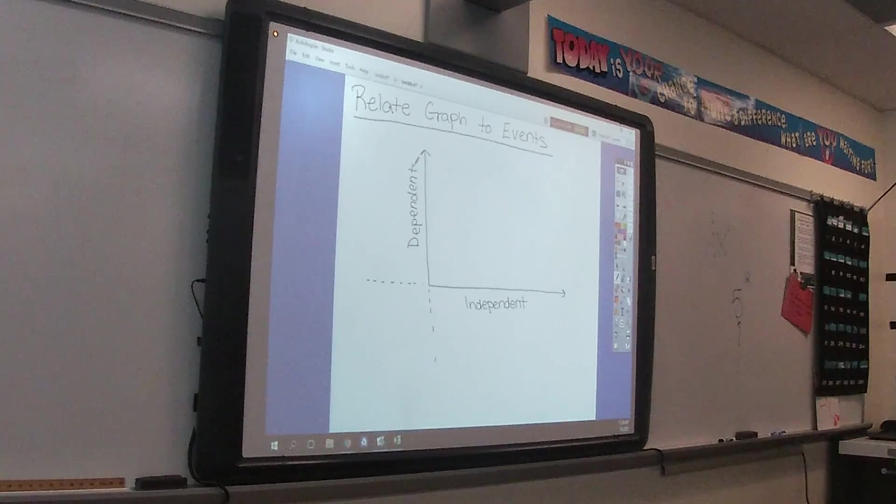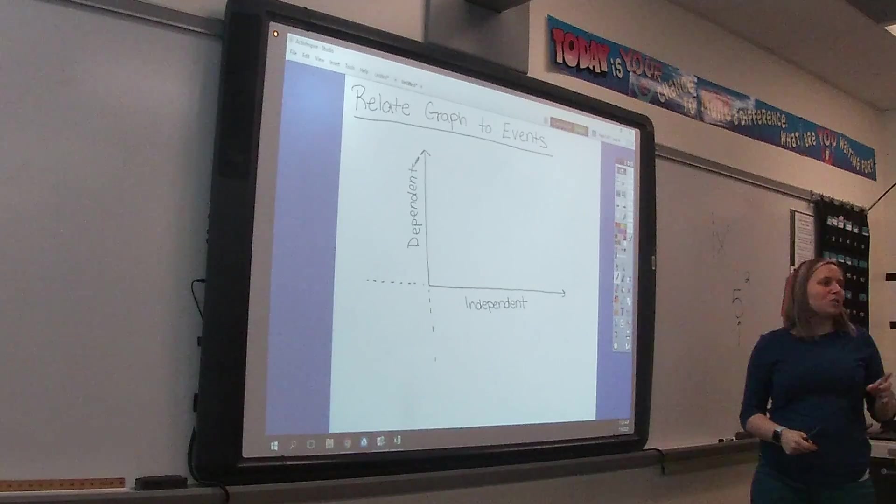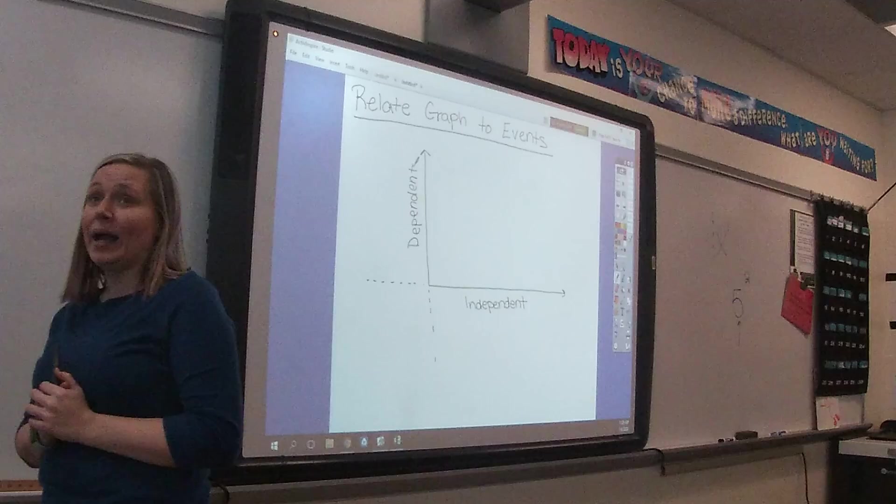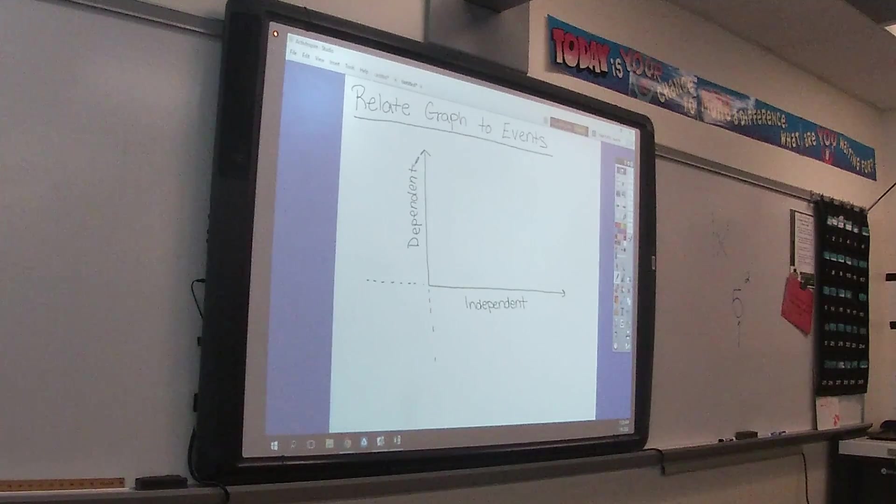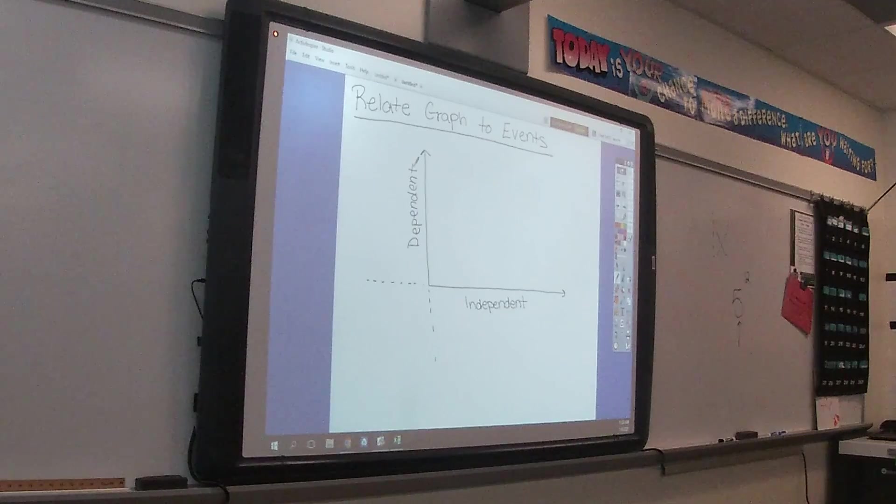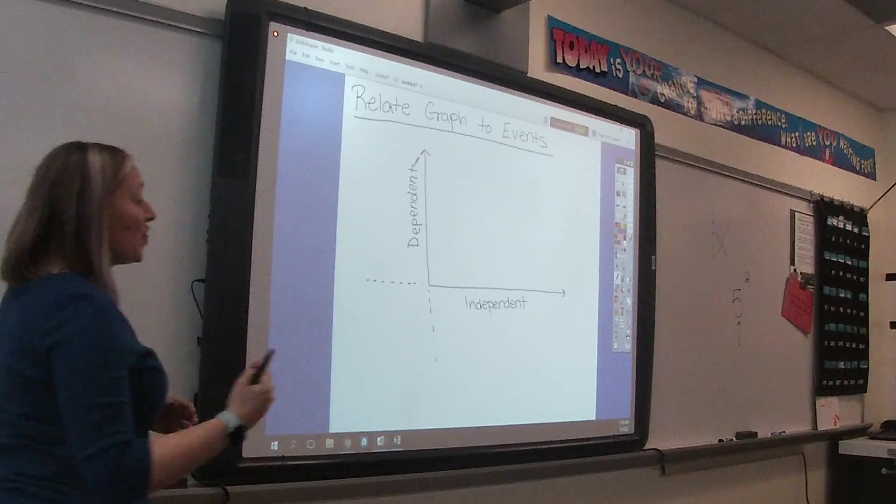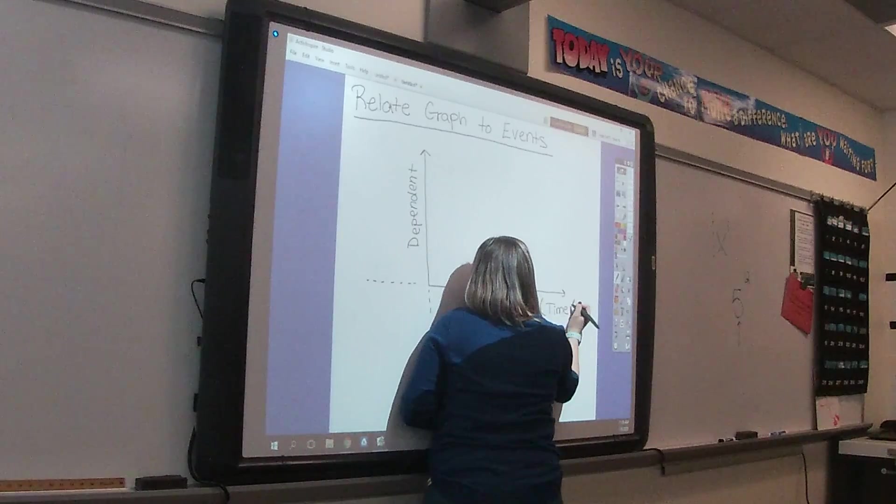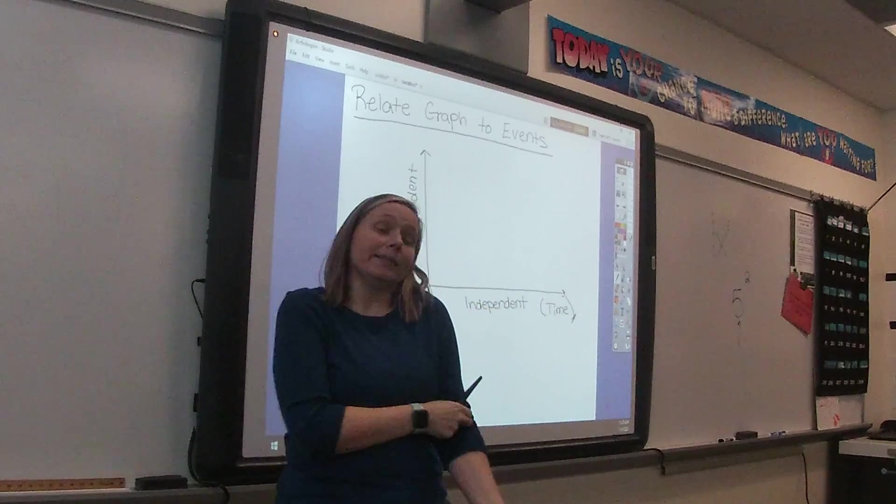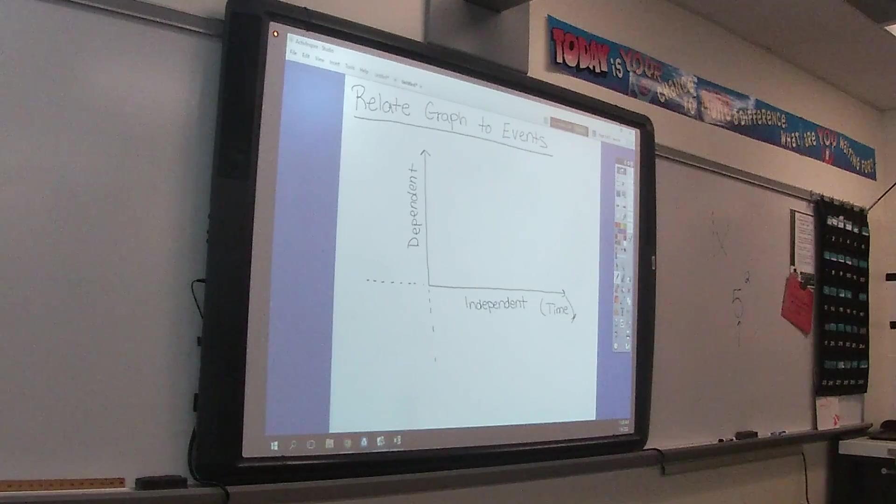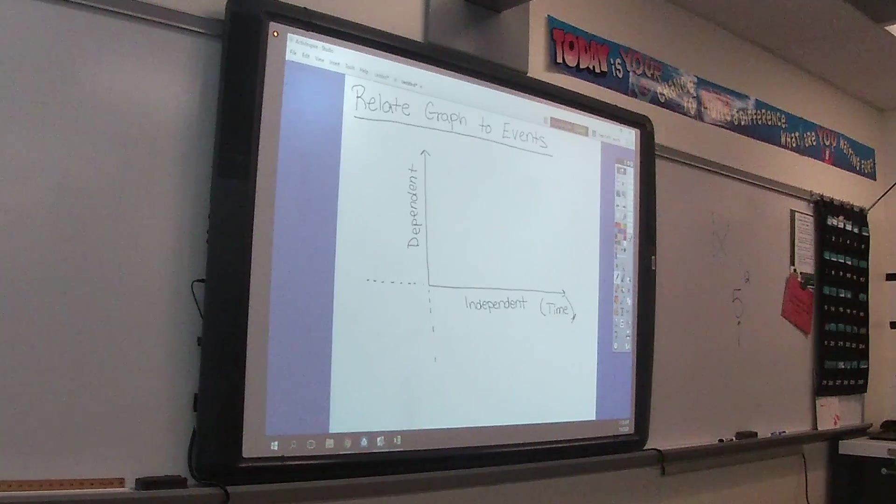And again, not always, but a lot of the time. So if you read a situation and you're like, I have no idea what my independent variable is, you should guess time. Because this is a lot of the time what is happening down here. Something with time. Days, seconds, weeks, years. Not always, but it's often the hidden one in a scenario.